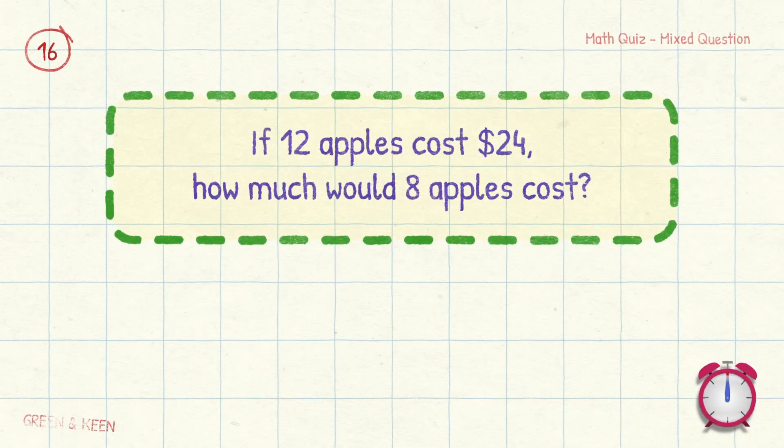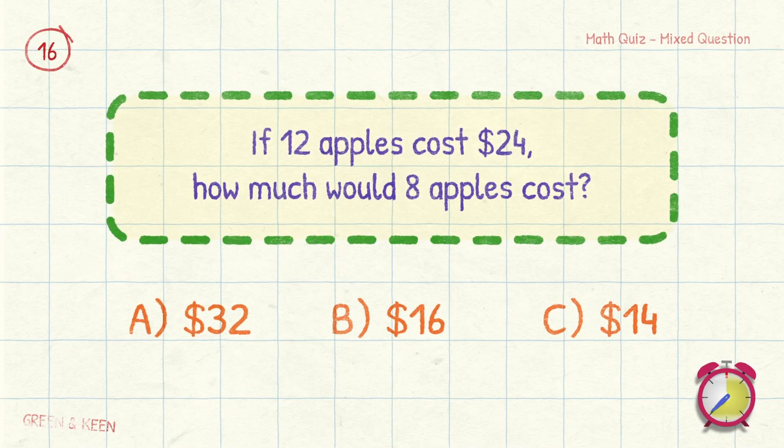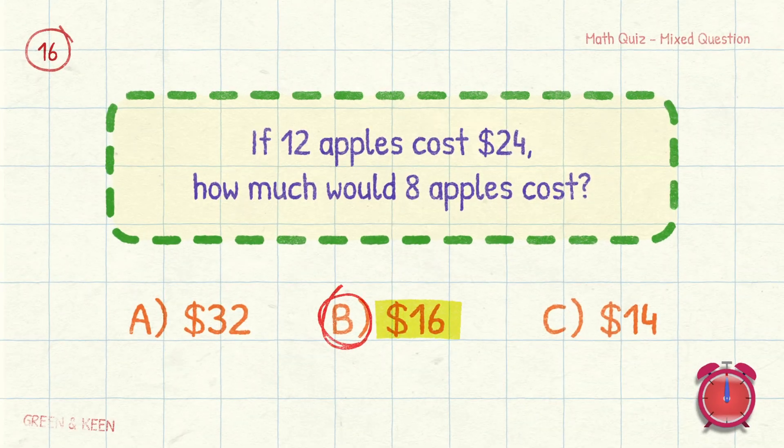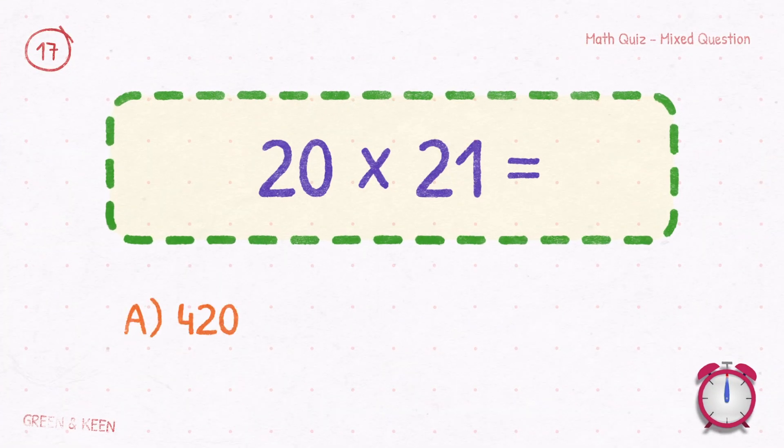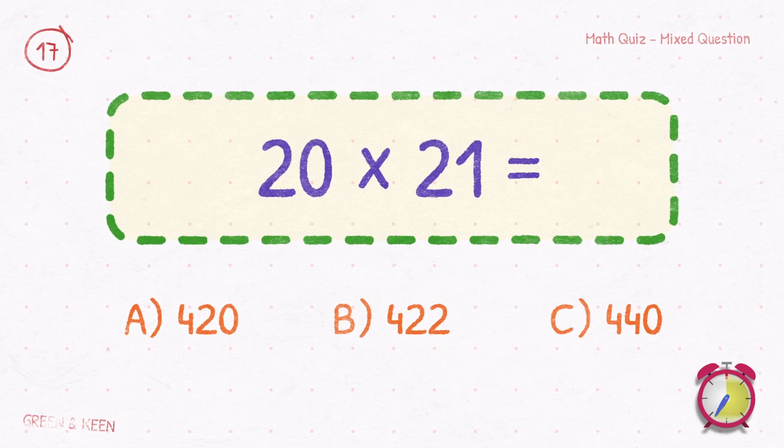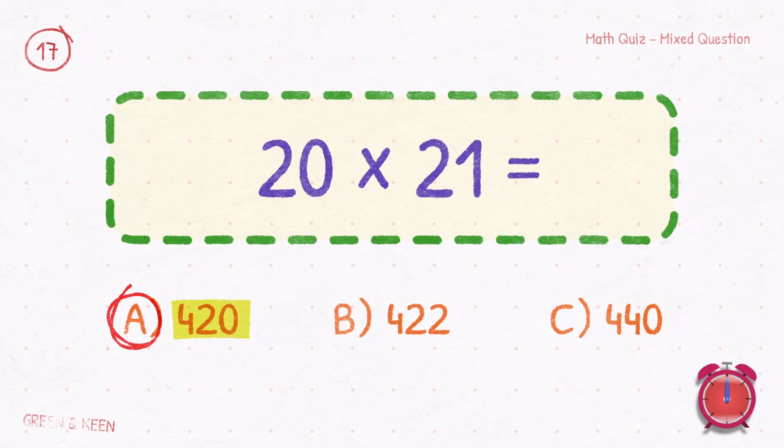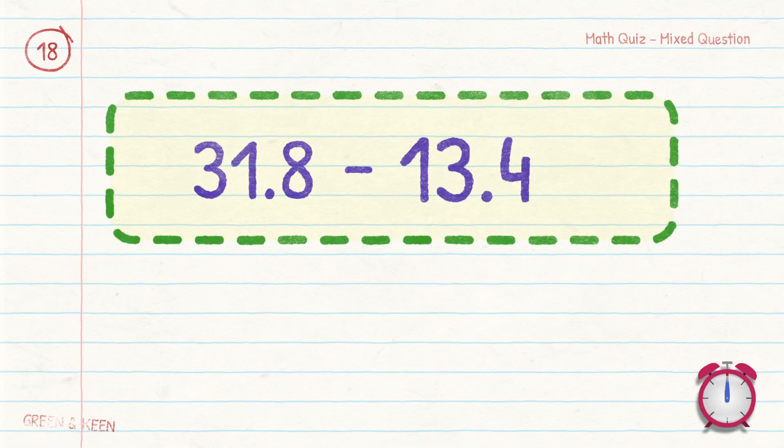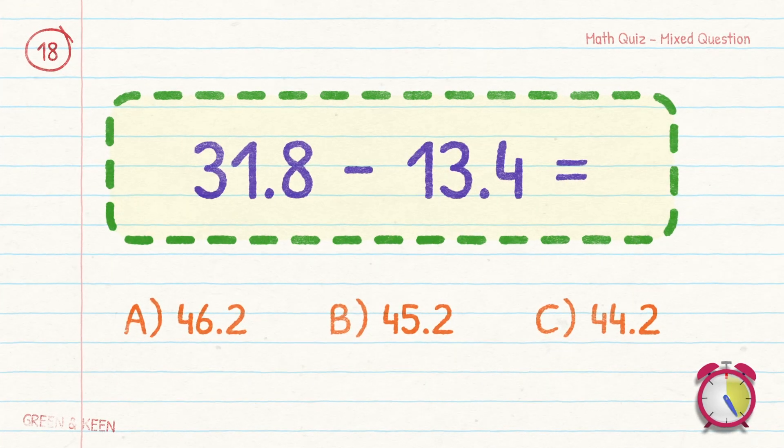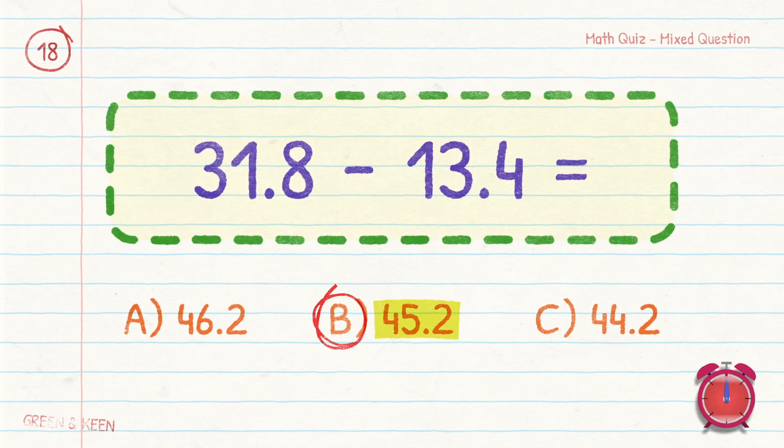If 12 apples cost $24, how much would 8 apples cost? $16. 20 times 21 equals? The answer is 420. 31.8 plus 13.4 equals? The answer is 45.2.